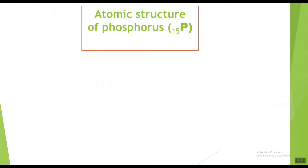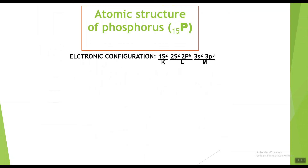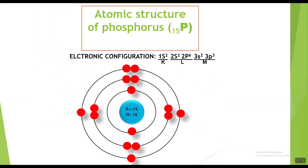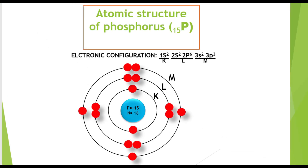Now phosphorus. The symbol for phosphorus is P with atomic number 15, showing it has fifteen electrons. The electronic configuration of phosphorus is 1s2 2s2 2p6 3s2 3p3, showing two electrons in the K shell, eight electrons in the L shell, and five electrons in the M shell. The atomic structure of phosphorus shows fifteen protons and sixteen neutrons in the nucleus, with fifteen electrons around the nucleus: two in the K shell, eight in the L shell, and five in the M shell.